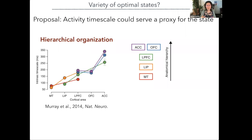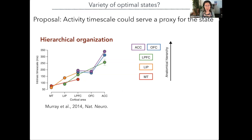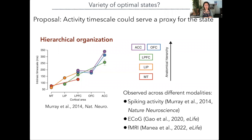In intrinsic timescales — without additional stimulation — it was already proposed in 2014 to look at how intrinsic timescales are ordered with respect to the hierarchical anatomical organization of the brain. We see the anatomical hierarchy of visual areas, and data from different labs show that as we go higher in the hierarchy toward more computationally heavy areas, we have larger timescales. As we go closer to immediate information processing, the timescales are shorter. These observations were confirmed in various modalities: spikes, ECoG, and fMRI.